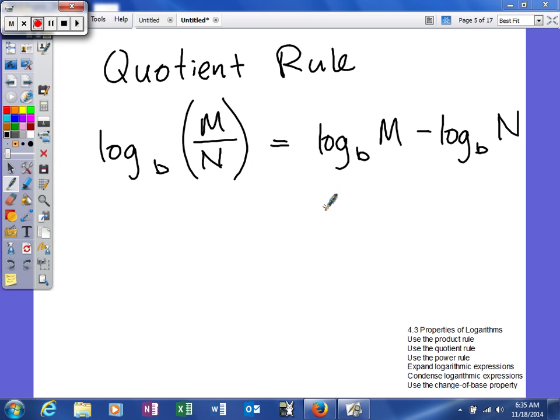Next what we're going to look at is the quotient rule. The quotient rule basically says this: quotient meaning division. So if you're taking the log base b of m divided by n, where what you're taking the log of is basically being divided, you can break this up. So log base b of m minus log base b of n.